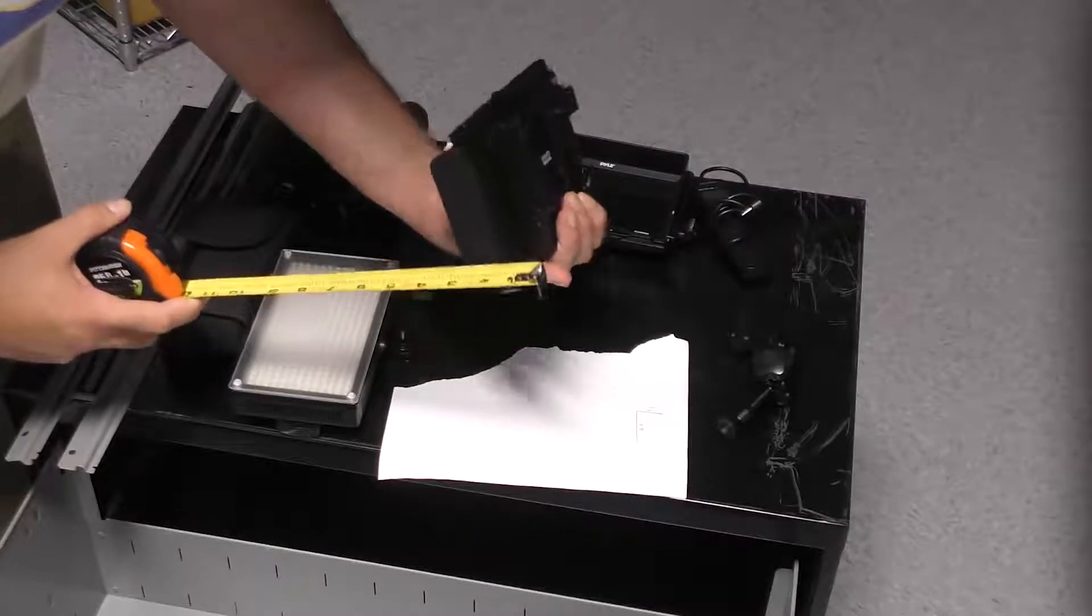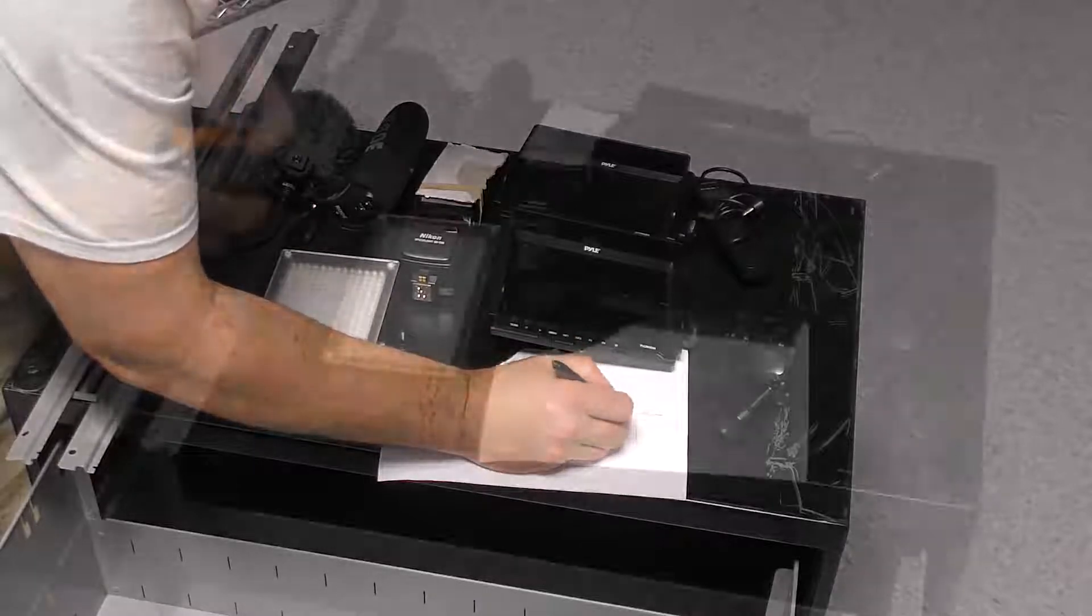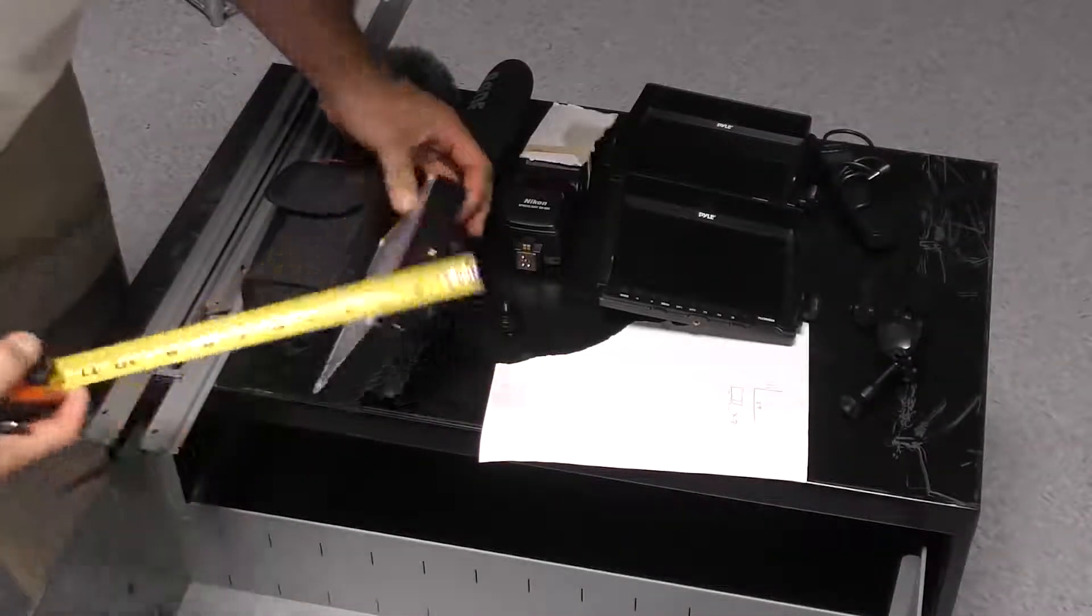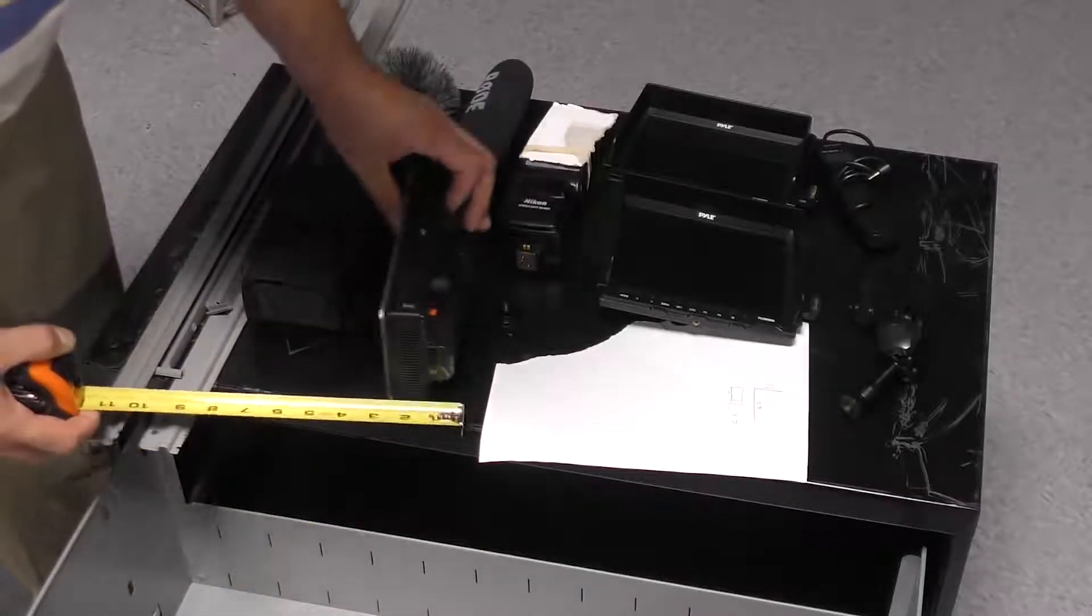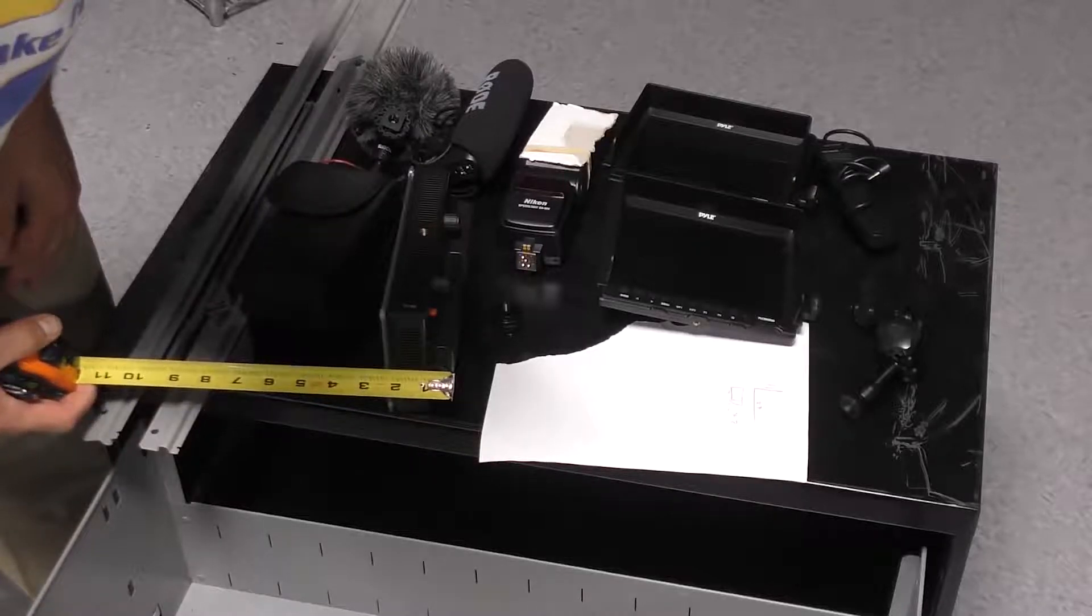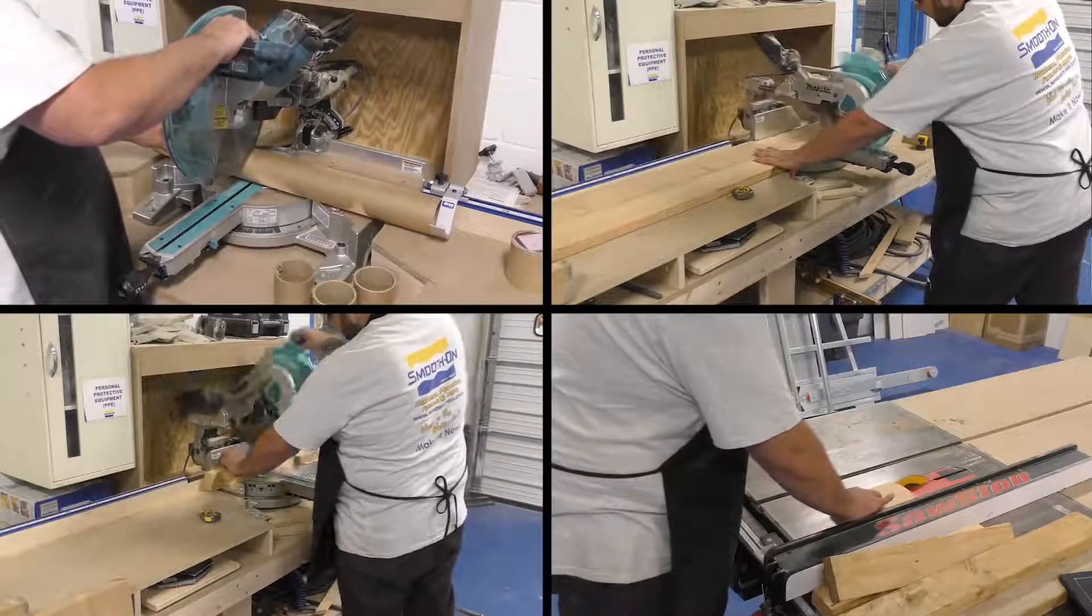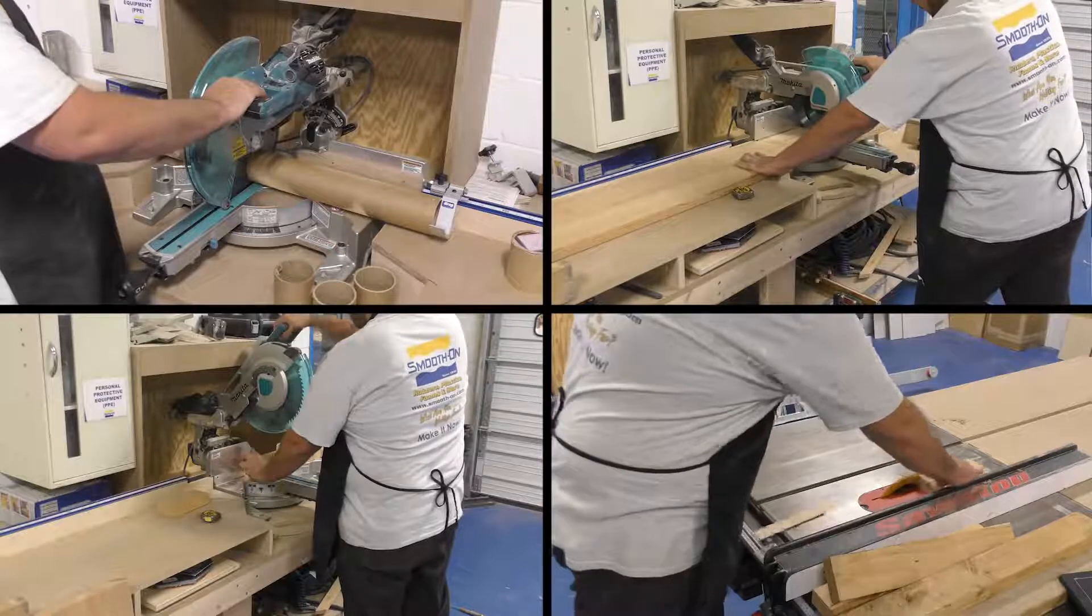The first step would be to take some measurements off the equipment that you want to make the housing. I'm just going to loosely write some numbers down that I can base my inserts on for this custom box. For these inserts, I'm going to be using a cardboard tube for the round pieces and some wood blocks for the square pieces.